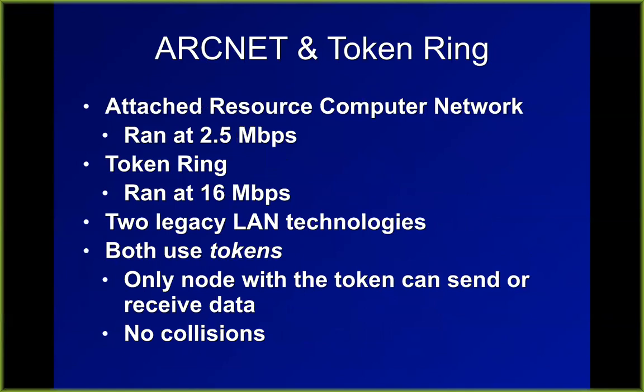Older network systems include ARCNET, running at 2.5 Mbps, and Token Ring, which became popular at campuses using two rings of fiber optics so the signal could go clockwise or counterclockwise — making it self-healing if one ring was cut. Both used tokens passed around the ring to control access, so there were no collisions and the full rated bandwidth was usable. Token Ring ran at 16 Mbps. These technologies were more expensive and lost in the marketplace; Ethernet's sloppier but more cost-effective technique replaced them.